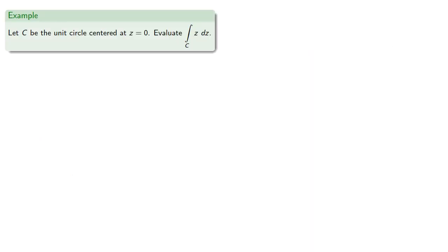So let C be the unit circle centered at Z equals zero. Let's evaluate the contour integral around C. So remember we can parameterize the unit circle as cosine t plus i sine t, or even more conveniently in exponential form e to the power i t.